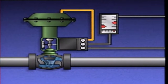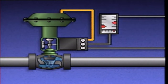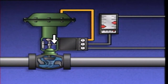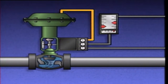This pressure is then applied to the actuator to close the valve. The feedback linkage indicates to the positioner how far the valve is from the desired position — in this case, fully closed. As the valve moves toward the fully closed position, the feedback linkage causes the positioner to change the air signal to the actuator.